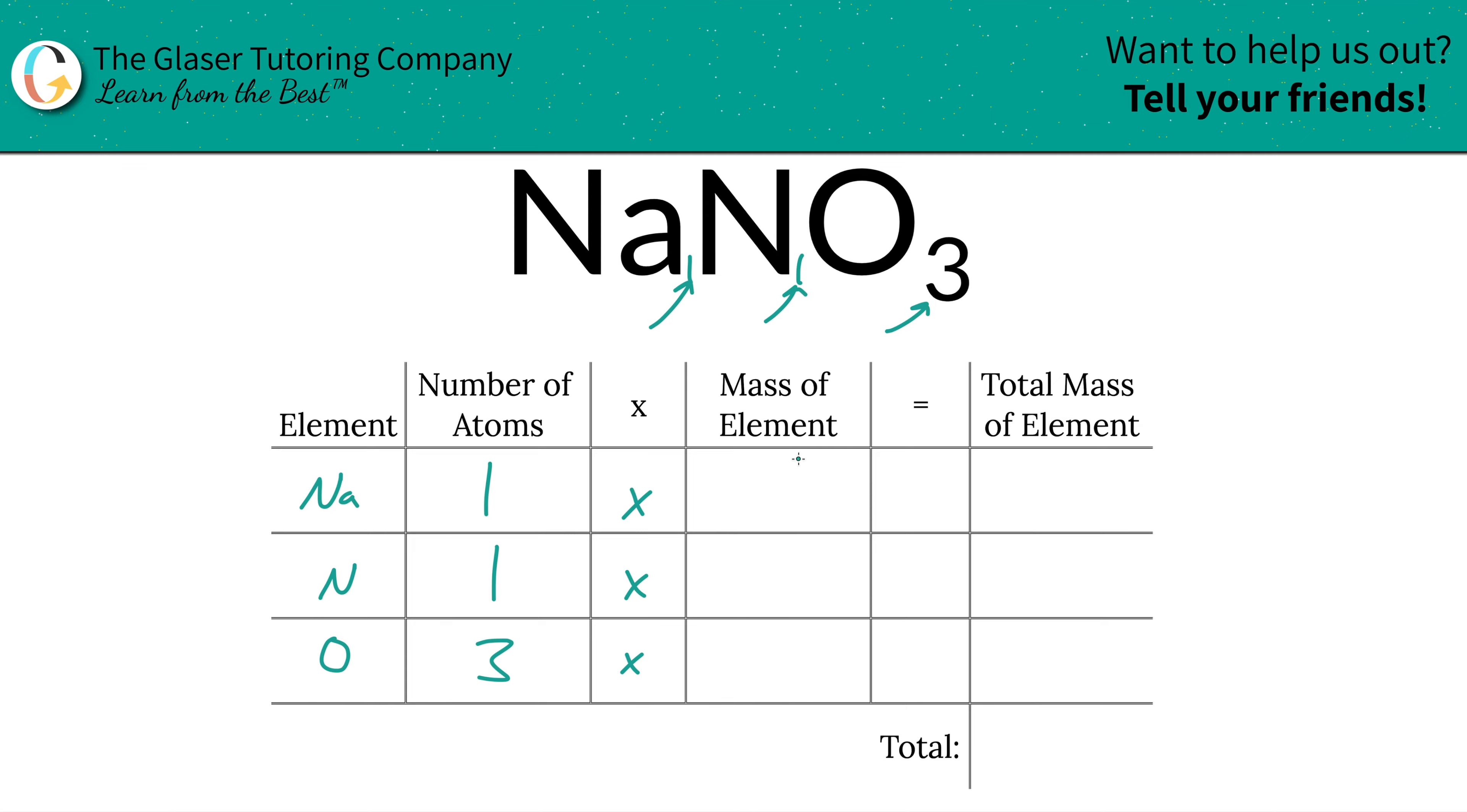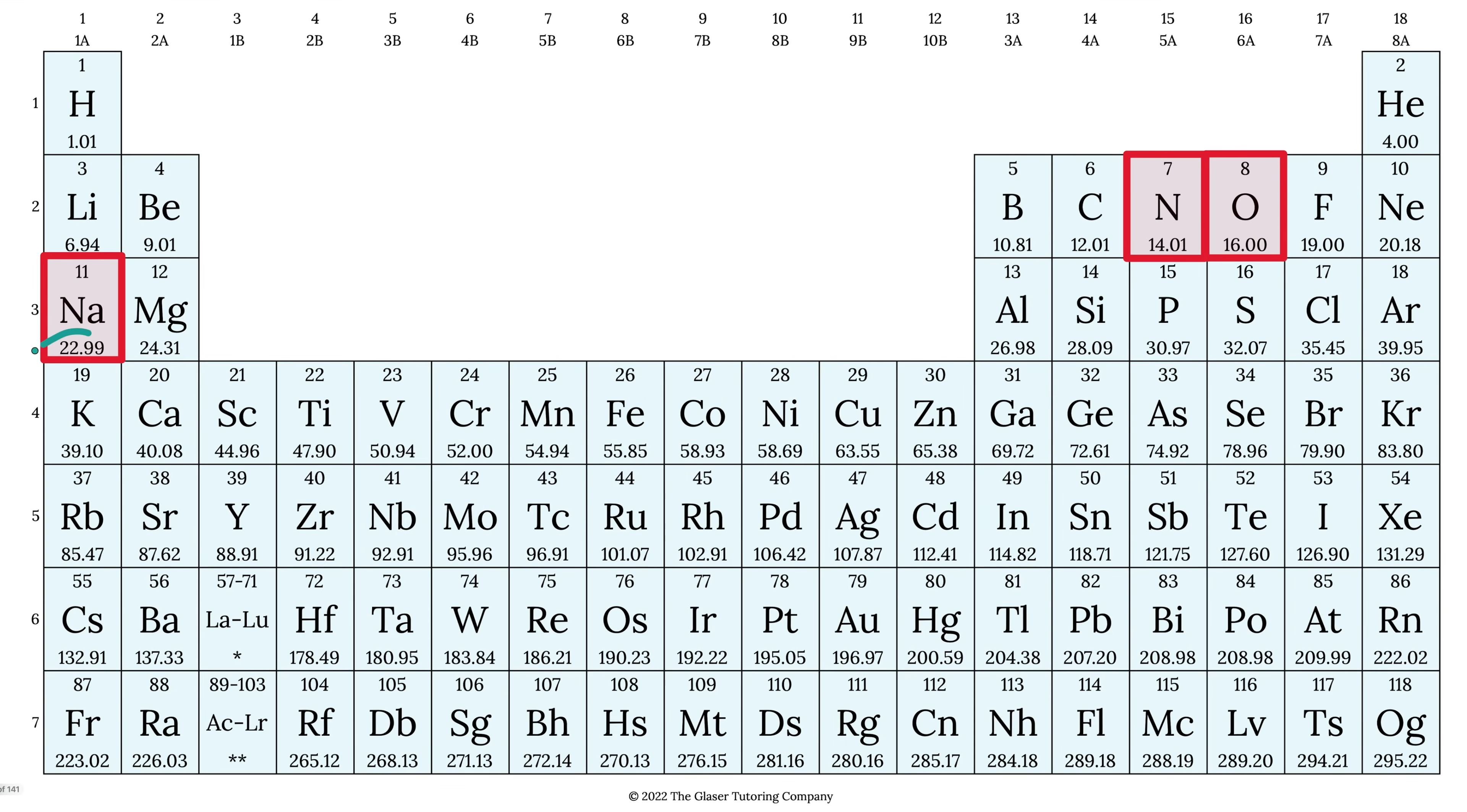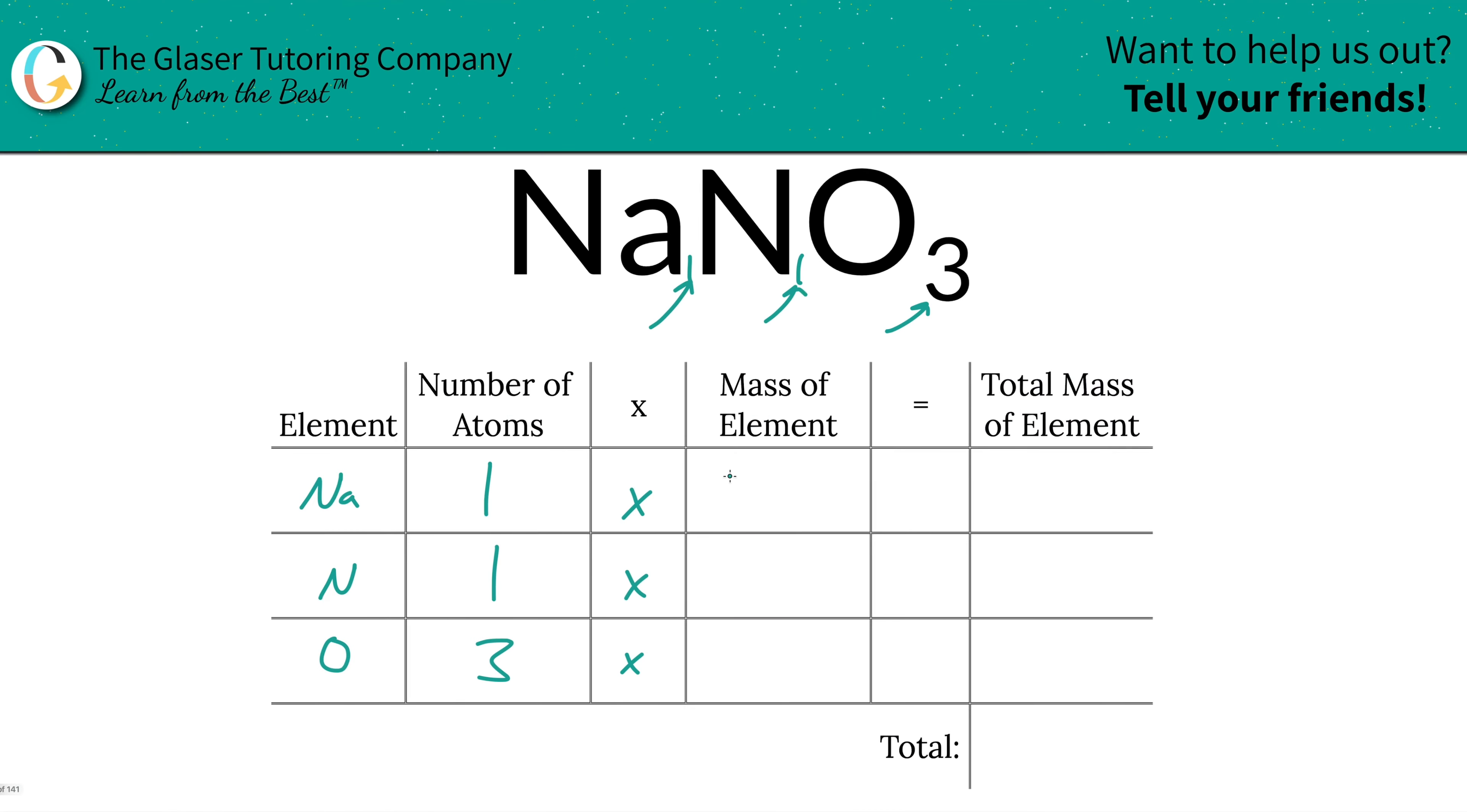So we're then going to take those number of atoms and multiply it by the mass of each element. That's where the periodic table comes into play. So sodium's mass is 22.99, nitrogen is 14.01, and the oxygen is 16.